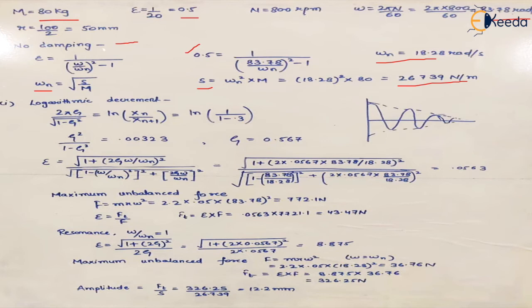Now the first thing to calculate is the force transmitted to the foundation at 800 rpm. To find the transmitted force, we use the formula for epsilon which is transmitted force upon applied force. This formula considers the damping factor as well. By using logarithmic decrement — the natural log of the ratio of two successive oscillations — we can find the damping parameters, since the oscillations are dying out with time.